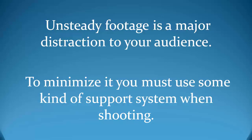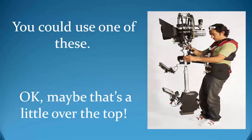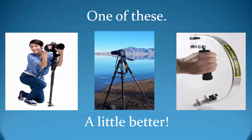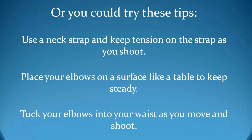To minimize this problem you must whenever possible use some kind of support or stabilizing system. You could spend thousands of dollars on a full Steadicam rig, but that may be a little bit over the top. You could use a tripod, a monopod, or even a handheld stabilizer. Of course sometimes even these simple devices are impractical, so try these tips: use the neck strap on your device and keep constant tension on it as you shoot; place your elbows on a tabletop or any flat surface; tuck your elbows into your waist as you move and shoot; lean against a wall or anything solid to reduce motion.